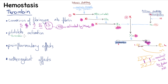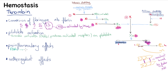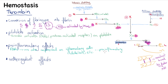Regarding platelet activation, thrombin is a potent activator of platelets and promotes their aggregation by activating PARs — protease-activated receptors — on platelets. This links platelet function to coagulation. For pro-inflammatory effects, PARs are also expressed on inflammatory cells, endothelium, and other cells. Thrombin's activation of these receptors contributes to tissue repair and angiogenesis.